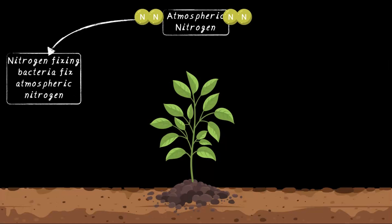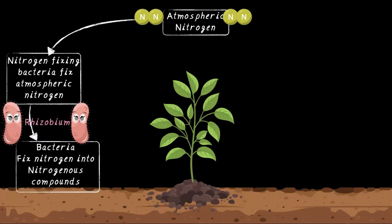The bacteria called rhizobium live in the root nodules of leguminous plants and fix nitrogen into nitrogenous compounds. These nitrogenous compounds are now available in the soil for plants to absorb through their roots.